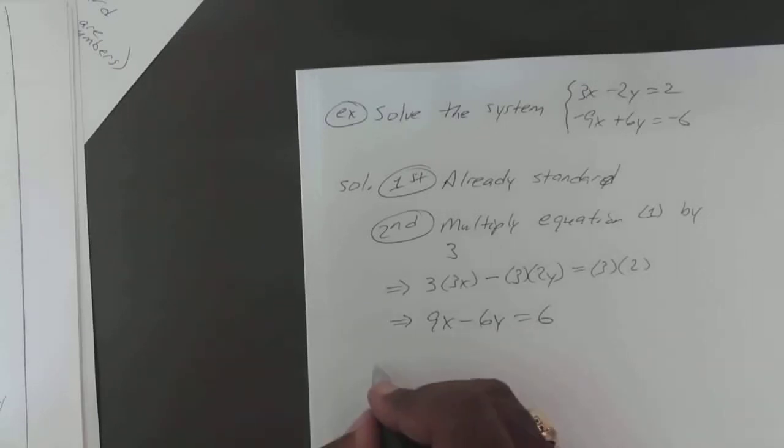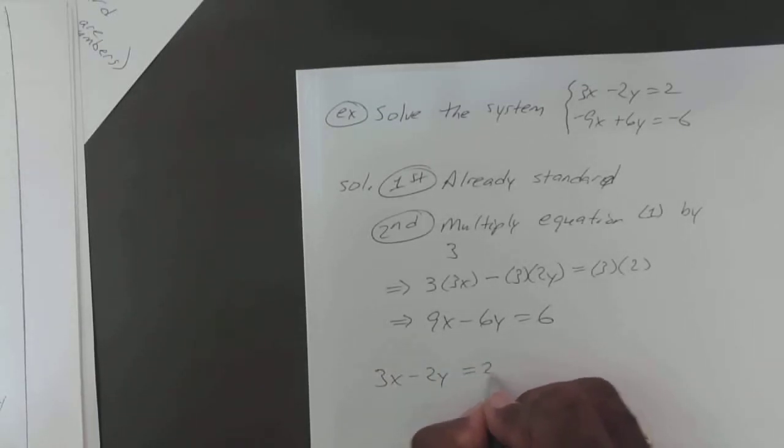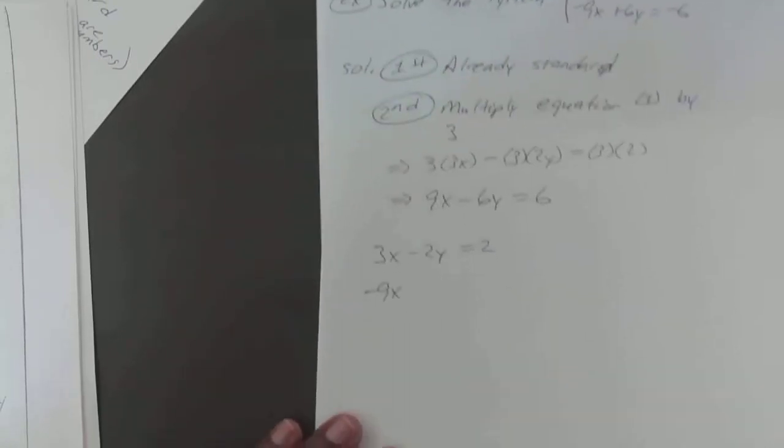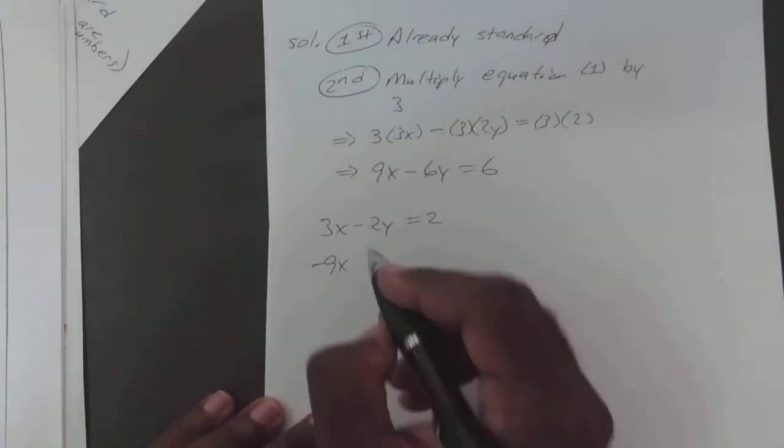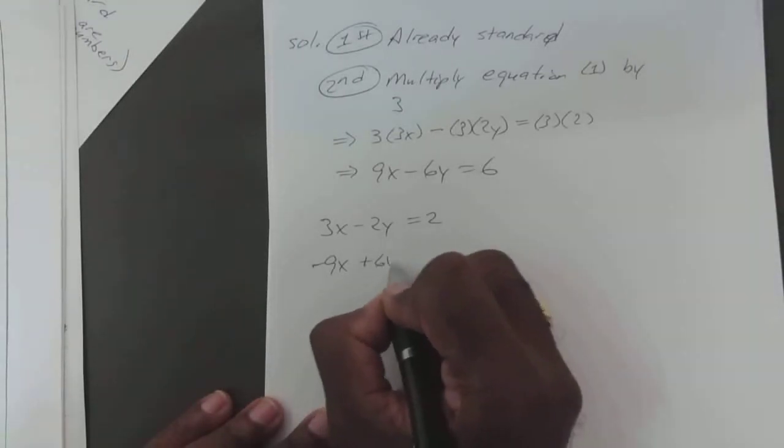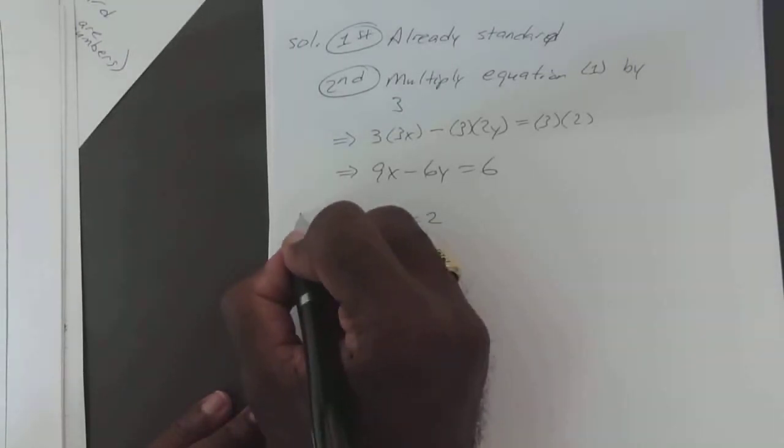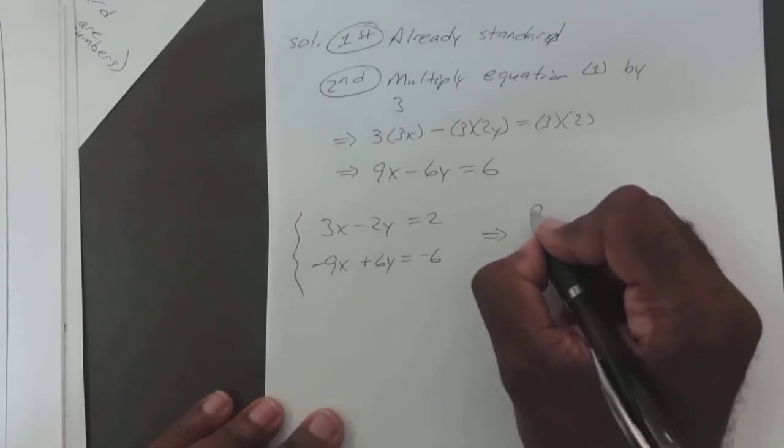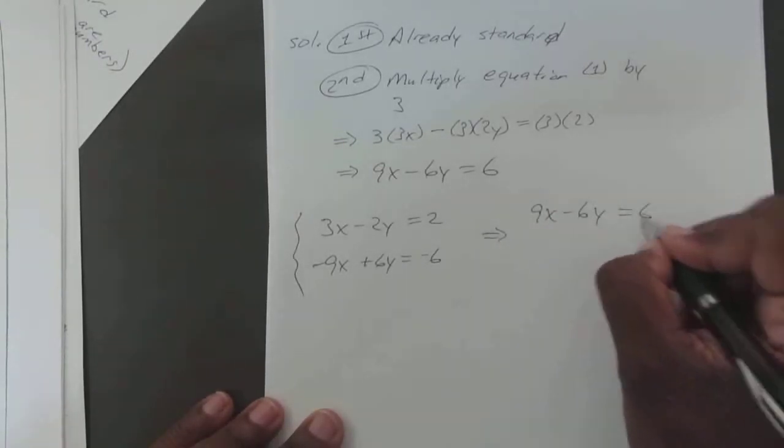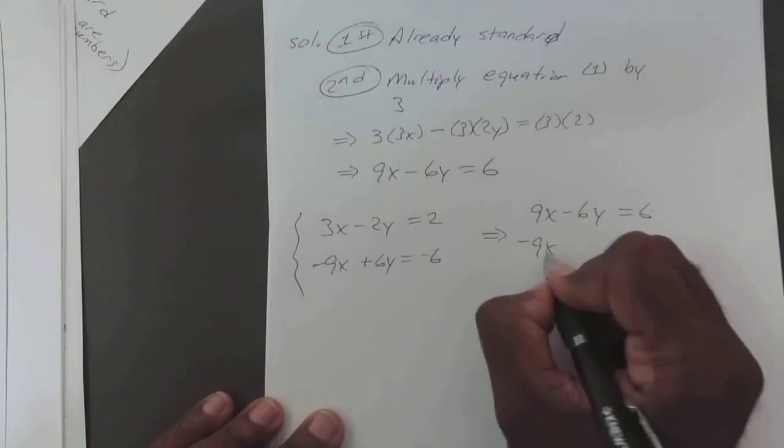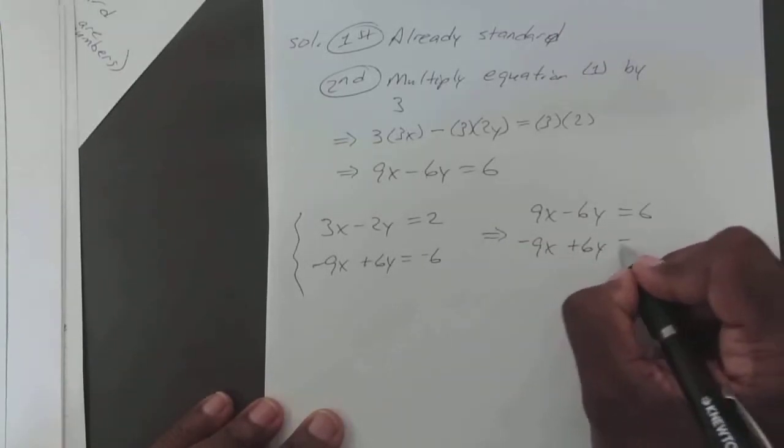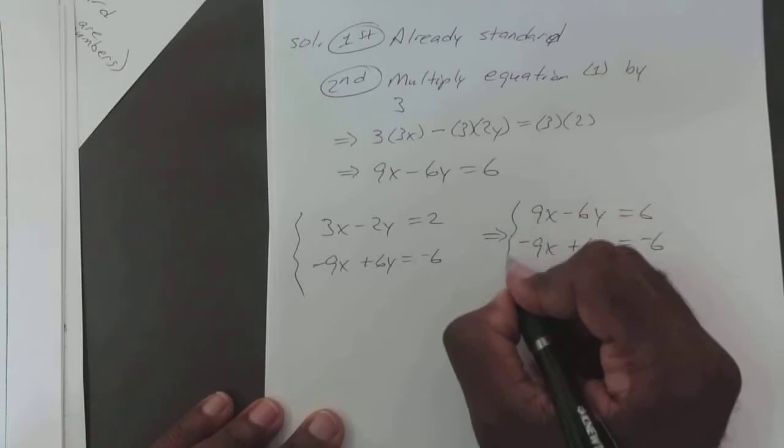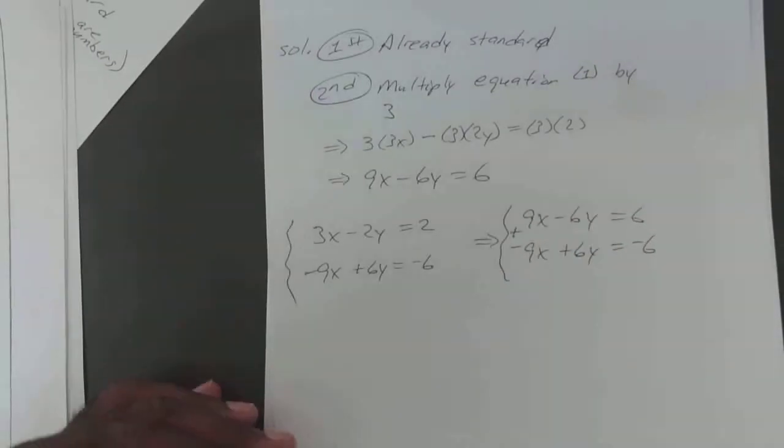So that means our original equation, 3x minus 2y equals 2, and negative 9x plus 6y equals negative 6, which is why I was so confused when it came out to be y equals 1 because it shouldn't have been there.